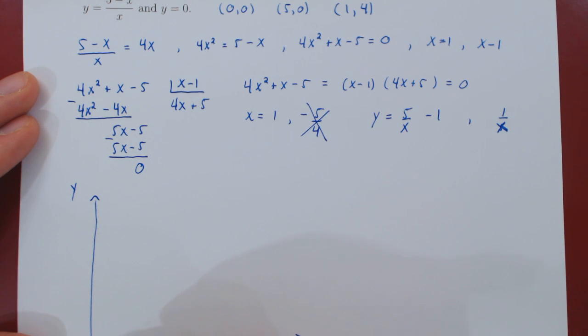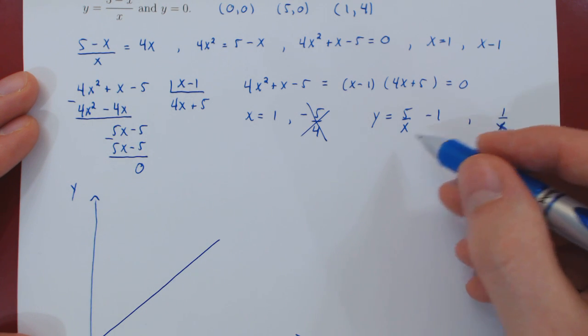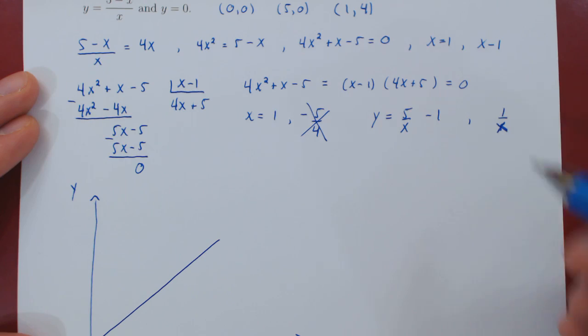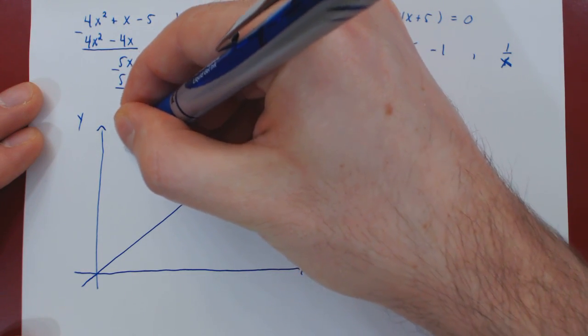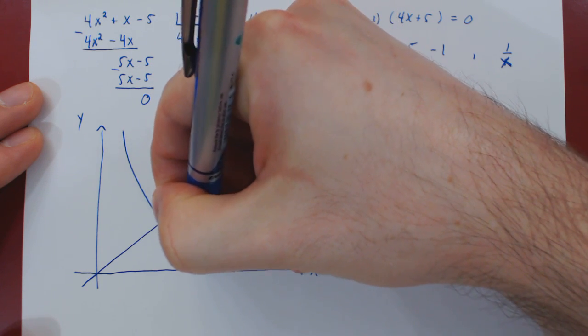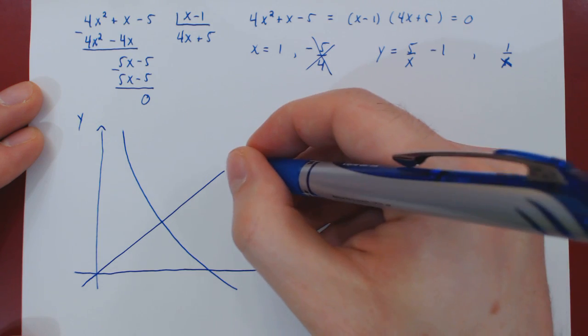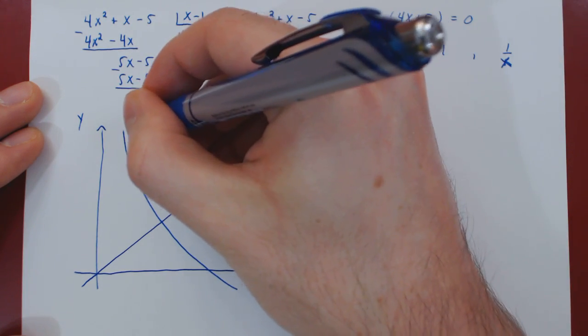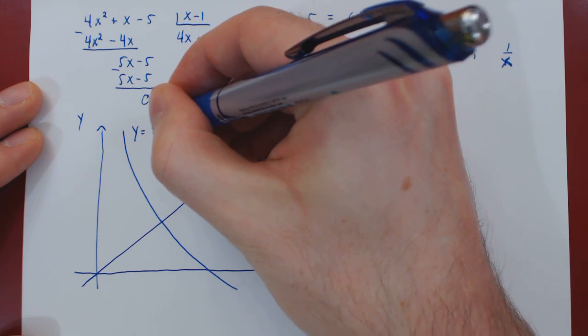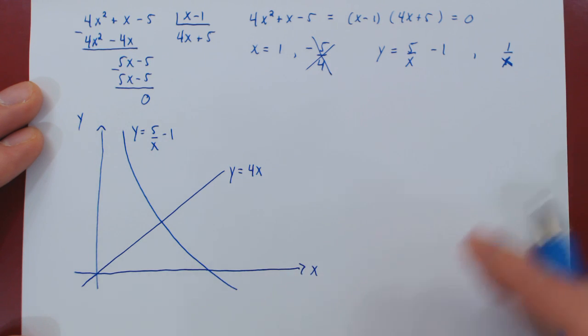So, y equals 4x, then 5 over x minus 1. Roughly speaking, it's about 1 over x. And now, of course, y equals 0 being the x-axis. We clearly see our three points of intersection.